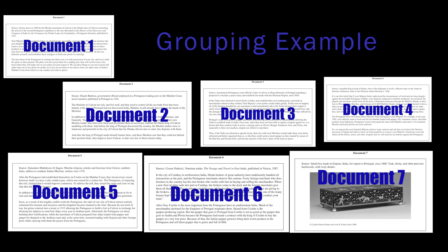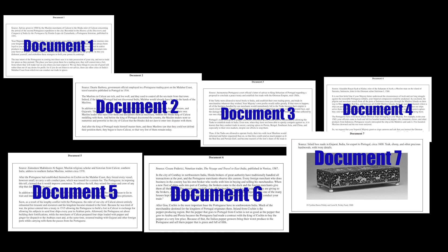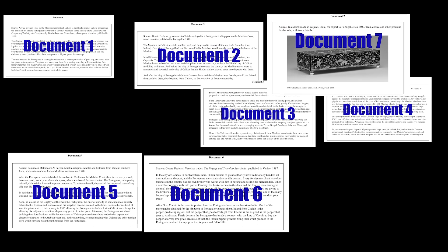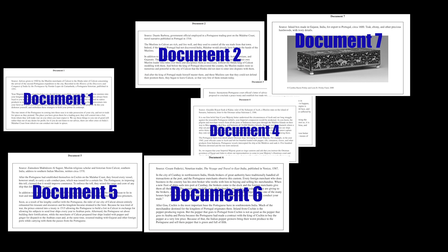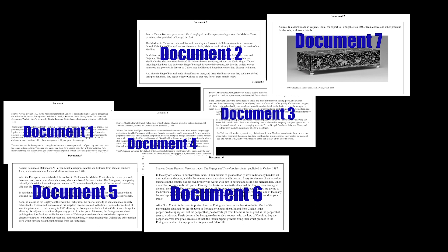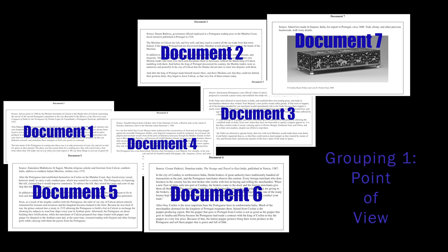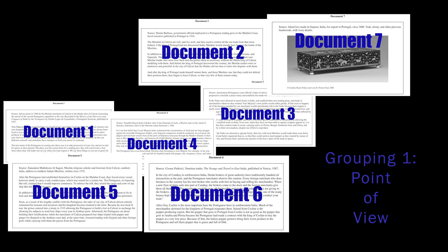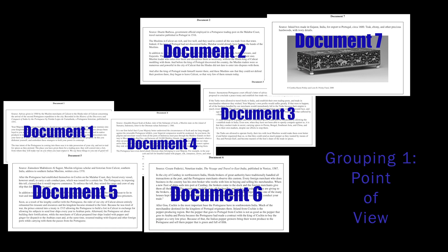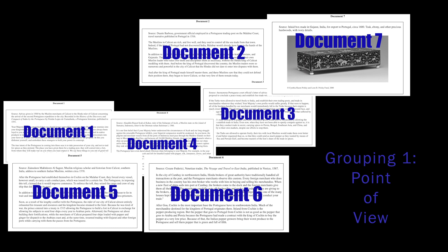With seven documents, we're going to group them two ways and not look for third groups, since with five documents it's less likely you'd wind up with three groupings. If we're looking from a surface point of view, the first thing I might go with is who's doing the talking. Documents two, three, and seven were all written from a Portuguese point of view, so I might throw those together. Documents one, four, and five are from a Muslim point of view, so I might group those. And document six is from a Venetian point of view. But this is very surface-level, and I'm not sure there's a through line to my groups that's going to help me make an argument.